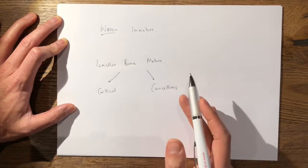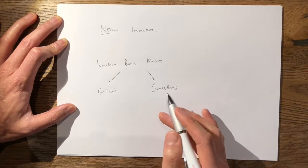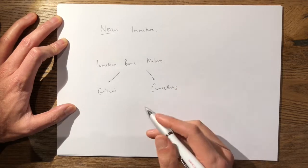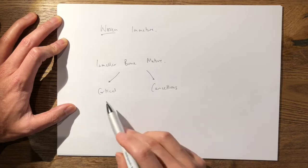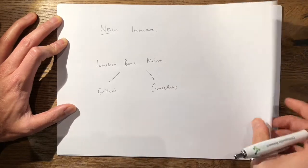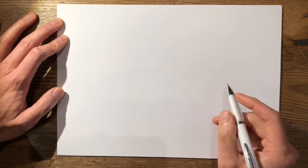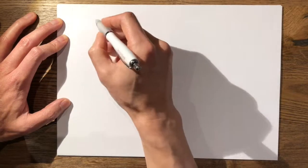Cancellous bone has eight times more metabolic activity compared to cortical bone. This is where you can bring in some diagrams explaining the structure of bone, with cortical bone up here and cancellous bone up here.